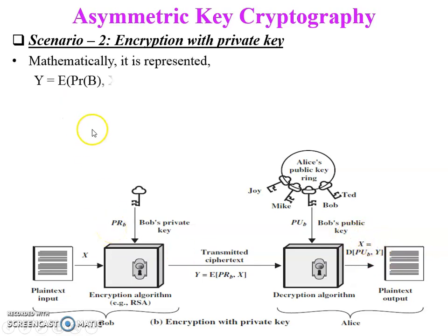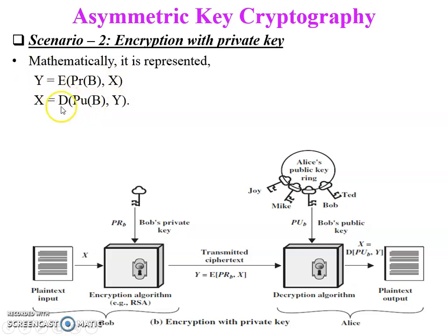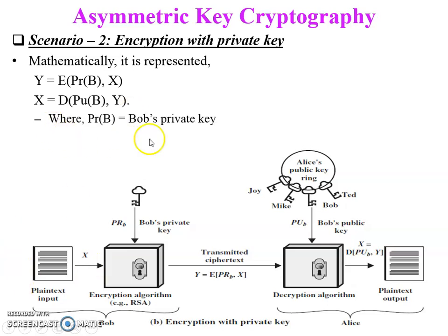Mathematically, the encryption process uses Bob's private key: E(PR_B, X) = Y. At the decryption side, the public key of Bob and ciphertext Y are inputs to the decryption algorithm: D(PU_B, Y) = X, which is the original plaintext message. Here PR_B is Bob's private key and PU_B is Bob's public key.